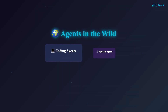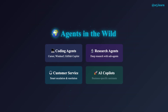Let's look at agents in action across different domains. Coding agents are probably the most common. Tools like Anthropic's Claude Code and GitHub Copilot integrate directly into your development environment — they can read your code, write new functions, run tests, and even debug errors autonomously. Some are supervised, like Cursor and Windsurf, where you approve each change. Others are unsupervised, working in the background while you focus on other tasks.